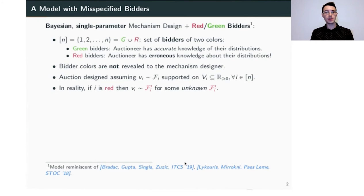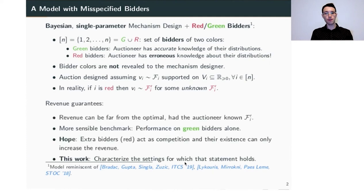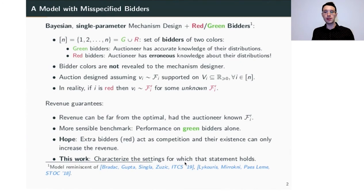What happens is the designer is assuming that the value v_i of bidder i is coming from a distribution f_i, when in reality this is only true for the green bidders. For the red bidders, their values v_i come from f_i prime, which is some unknown distribution. Ideally we would like to compare the revenue of that auction with an auction designed under the correct assumptions, but those two revenues can be too far apart. A more sensible benchmark is to compare our revenue to the revenue of an optimal auction run only on the green bidders. Our hope is that the existence of the extra red bidders does not hurt revenue — in fact, they can even act as competition and increase the total revenue.